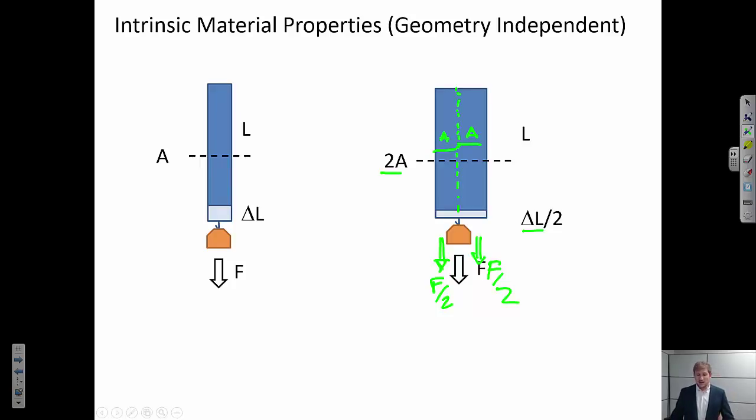And in response to carrying half the load, if we're elastically deforming, it's only going to elongate half the same extent. So this is an example where we would like to normalize to remove this geometric effect. And so what we do is instead of talking about forces on materials, we talk about force per unit area. And we call that stress. Stress equals F over A.